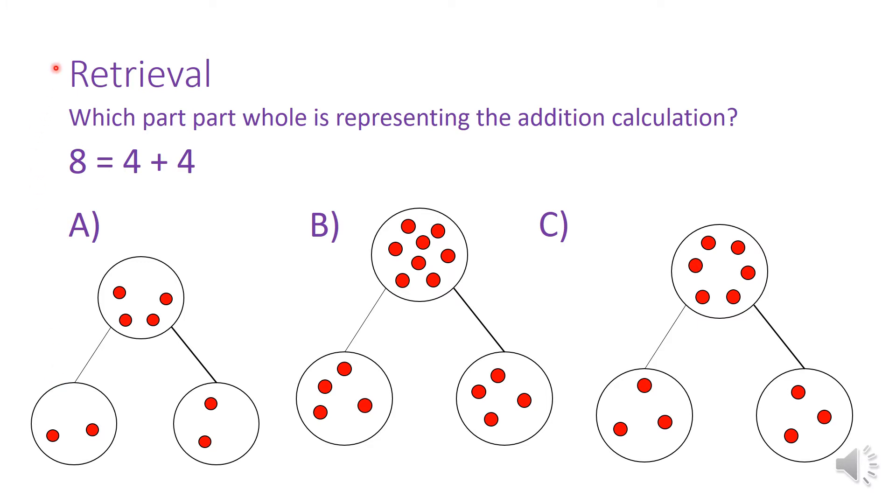So this is looking at something that we looked at yesterday. Which part part whole is representing the addition calculation? The calculation is 8 equals 4 add 4. So which part part whole is showing that calculation? Is it A, B or C? Pause the video to have a good look and read through the question again if you need to and then press play and I'll give you the answer.